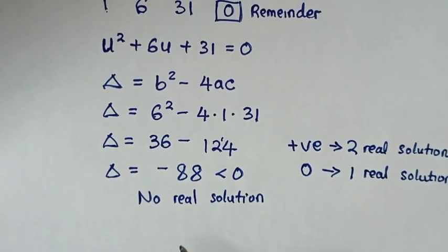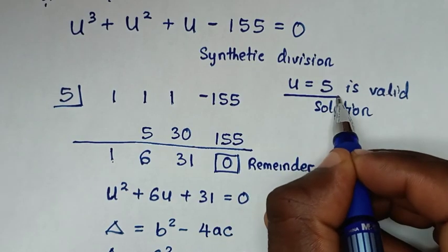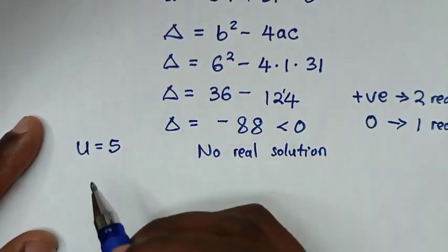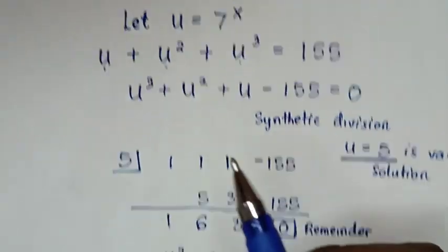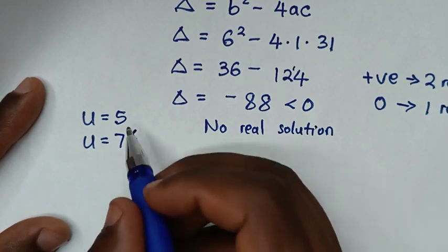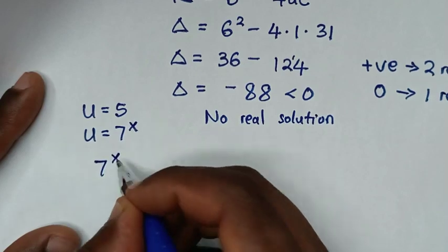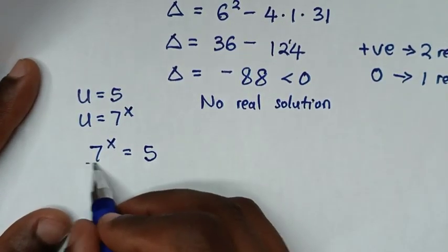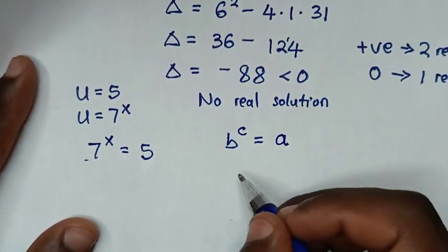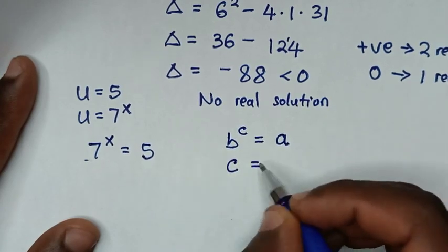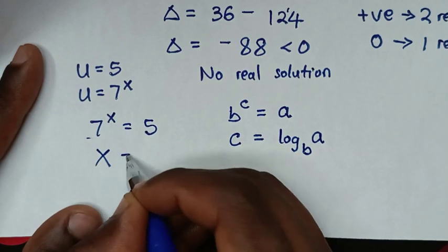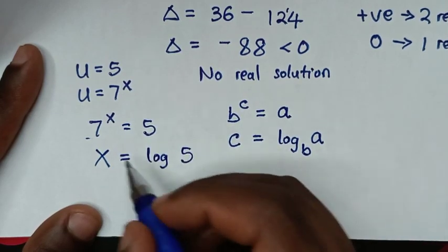The only solution is u equal to 5. Recalling that we let u equal to 7 power x, we substitute back: 7 power x equals 5. This is in exponential form, where b power c equals a. Converting to logarithmic form, c equals log of a base b. Therefore, x equals log of 5 base 7. This is our final answer.